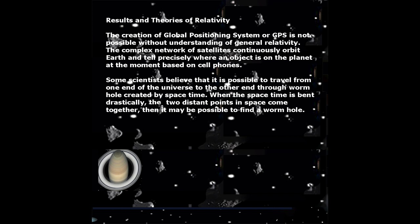Results and theories of relativity: The creation of the global positioning system, or GPS, is not possible without an understanding of general relativity. The complex network of satellites continuously orbits Earth and tells precisely where an object is on the planet, based on cell phones.